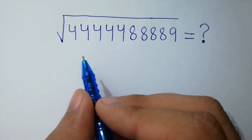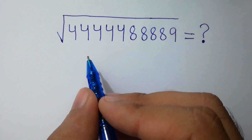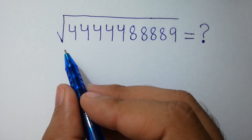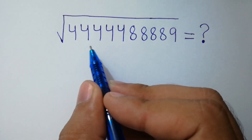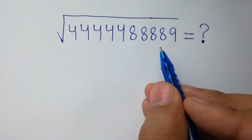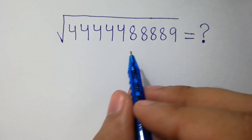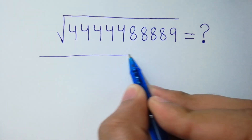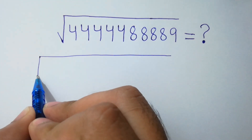Hello friends, can you solve this without using any calculator? We have the square root of 5 times 44 times 89. Let's solve it.